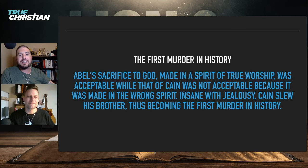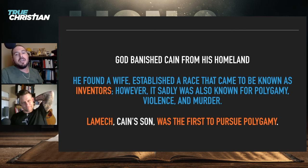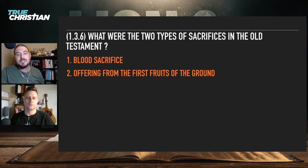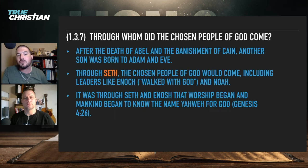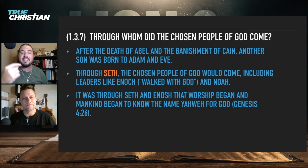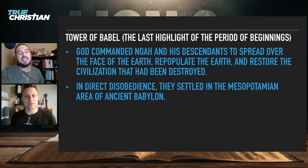Abel's sacrifice to God, made in the spirit of true worship, was acceptable; Cain's was not because it was made in the wrong spirit. Insane with jealousy, Cain slew his brother, becoming the first murderer in history. God banished Cain, who found a wife and established a race known for invention but also for polygamy, violence, and murder — Lamech, Cain's son, was the first to pursue polygamy. There are two types of sacrifice in the Old Testament: blood sacrifice and offerings from the first fruits of the ground. The chosen people came through Seth, after Abel died and Cain was banished — Seth leads to Noah, which leads to Abraham.